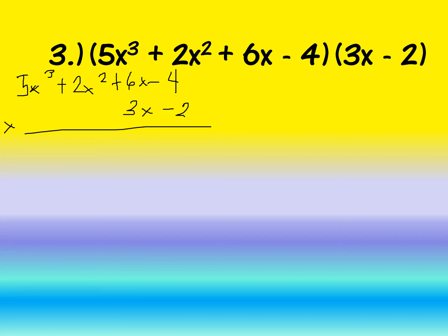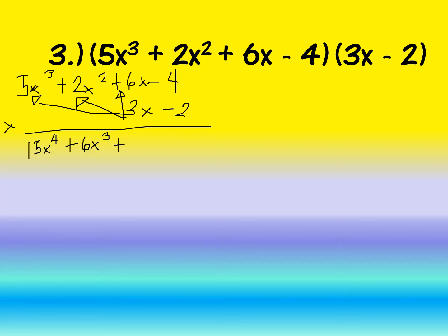Multiply 3x by 5x³: 5 times 3 gives 15, copy x, add exponents 3 plus 1 to get 4, so 15x⁴. Then 3x times 2x²: 2 times 3 gives 6, copy x, exponent 2 plus 1 gives 3, so 6x³. Then 6x times 3x: 6 times 3 gives positive 18, exponent 1 plus 1 gives 2, so 18x². Last: 3x times negative 4 gives negative 12x.